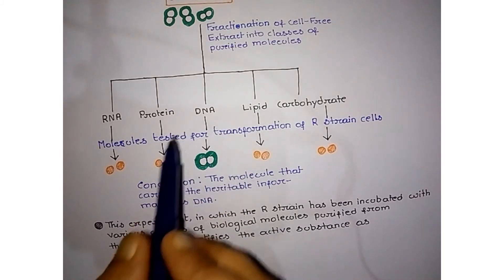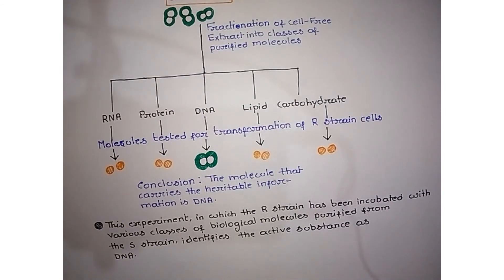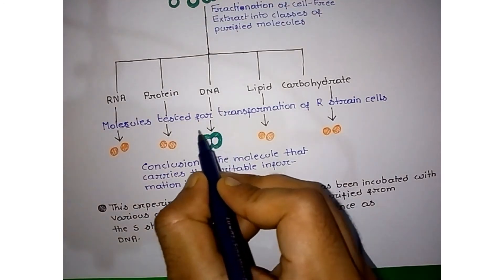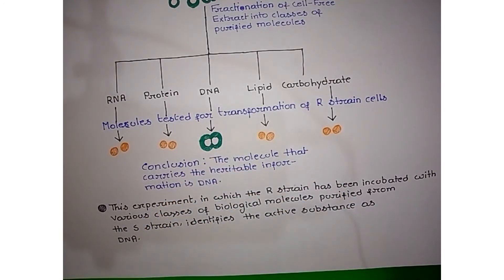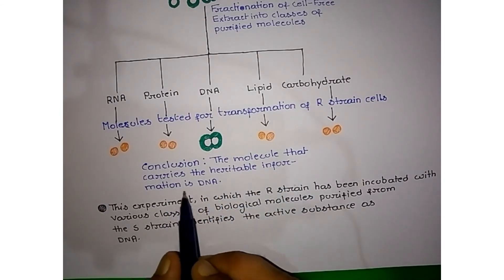However, when we incubate R-strain in the presence of DNA collected from the S-strain cell, we can see that some R-strain cells transform into S-strain. From this experiment we can conclude that the molecule carrying heritable information is DNA.